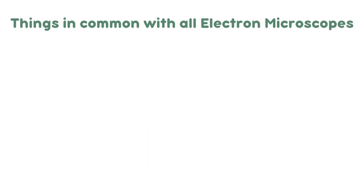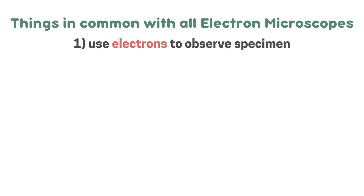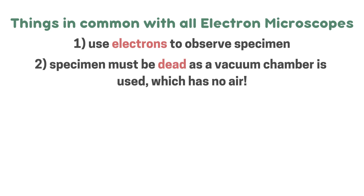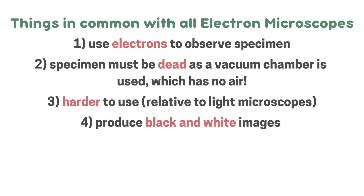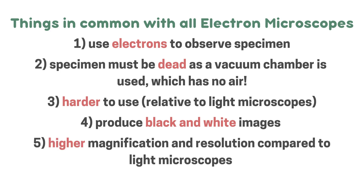You need to know the things in common with all electron microscopes. They use electrons to observe the specimen. The specimen must be dead because a vacuum chamber is used, which has no air. The reason a vacuum chamber is used is because the electrons must not collide with molecules from the air. They are harder to use relative to light microscopes. They produce black and white, non-coloured images because electrons do not consist of light and no light is used. Lastly, they have a higher magnification and resolution compared to light microscopes.